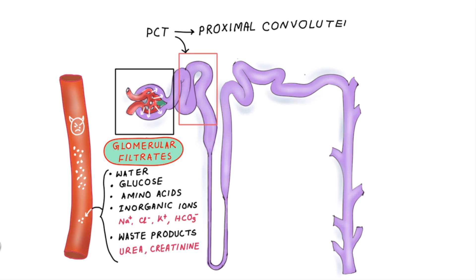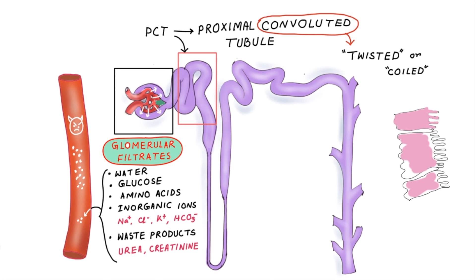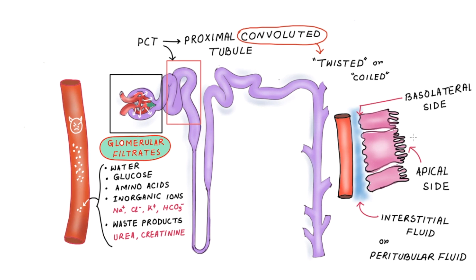The next destination for the filtrate is the proximal convoluted tubule. Convoluted simply means twisted or coiled. This region is lined by simple cuboidal epithelium, and substances pass from the apical side to the basolateral side of the cells out into the interstitial fluid. Approximately 65% of sodium ions are reabsorbed here through various methods.